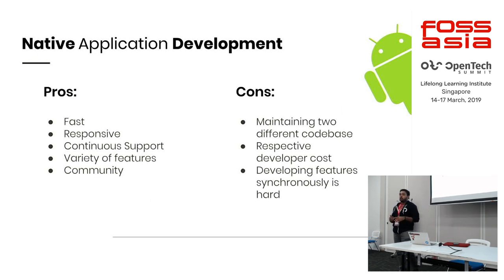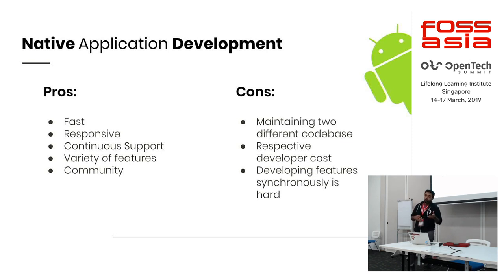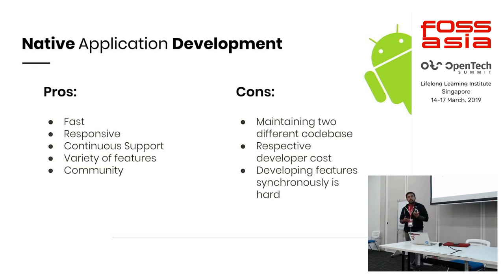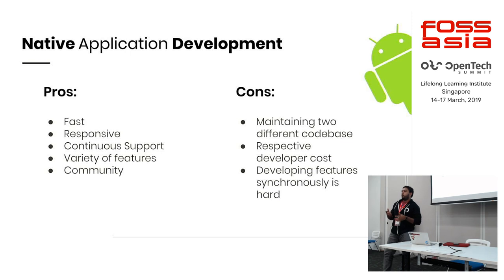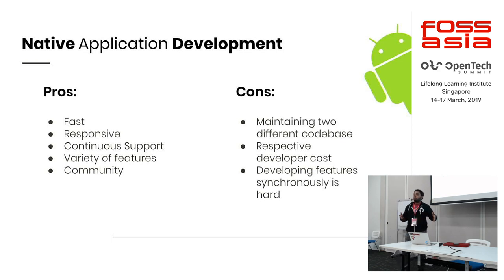Whatever we do and whatever platform we're talking about, everything has pros and problems. Some pros I noticed in native applications: most people say native applications are fast — that's a key thing hybrid applications are trying to achieve — and they are also responsive. They have continuous support because native applications are developed by big brands: Android has Google, iOS has Apple. The variety of features is proven, and the community is the biggest part — we have a lot of developers who specialize in Android or iOS.